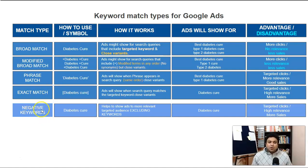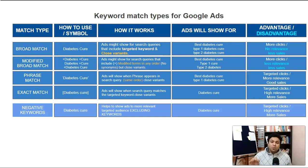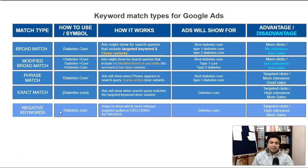I'm going to create a separate in-depth video on negative keywords, because to use them properly you should know how to use Google Keyword Planner to find keywords that aren't right for your niche or product. That comes through keyword research. But the benefit of negative keywords is they ensure clicks are highly relevant, which leads to more sales. You use negative keywords alongside modified broad match, phrase match, and exact match.